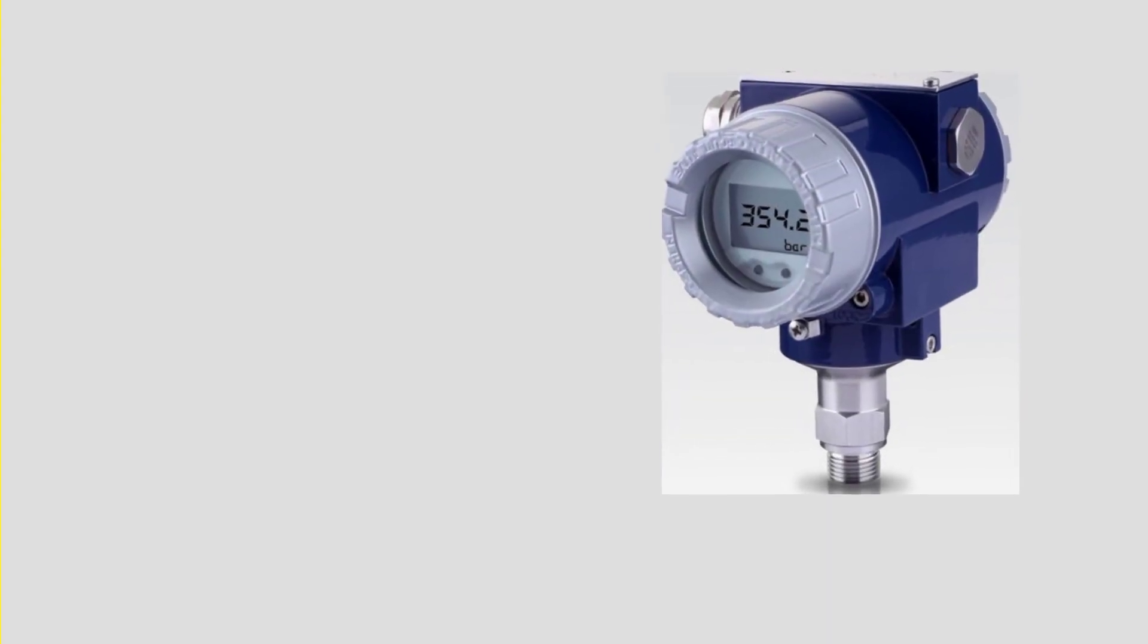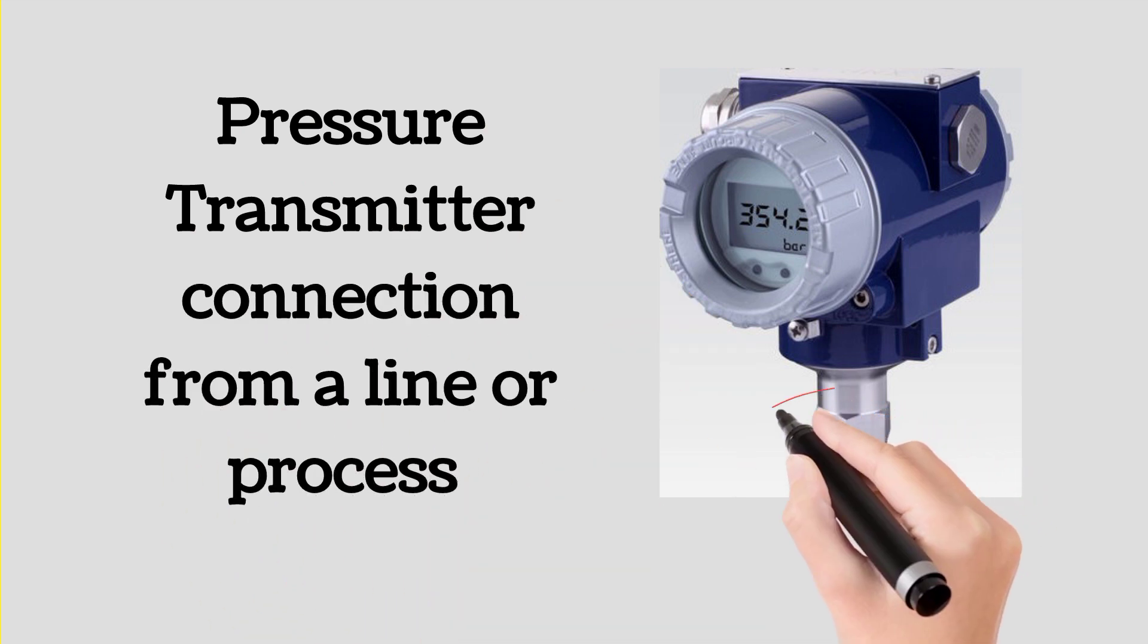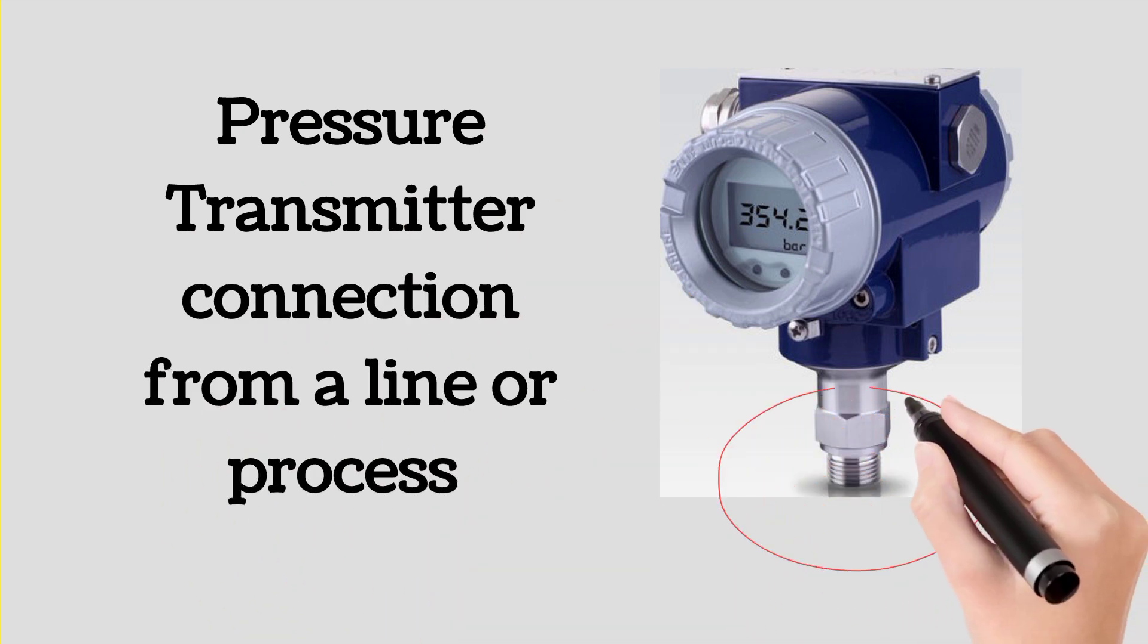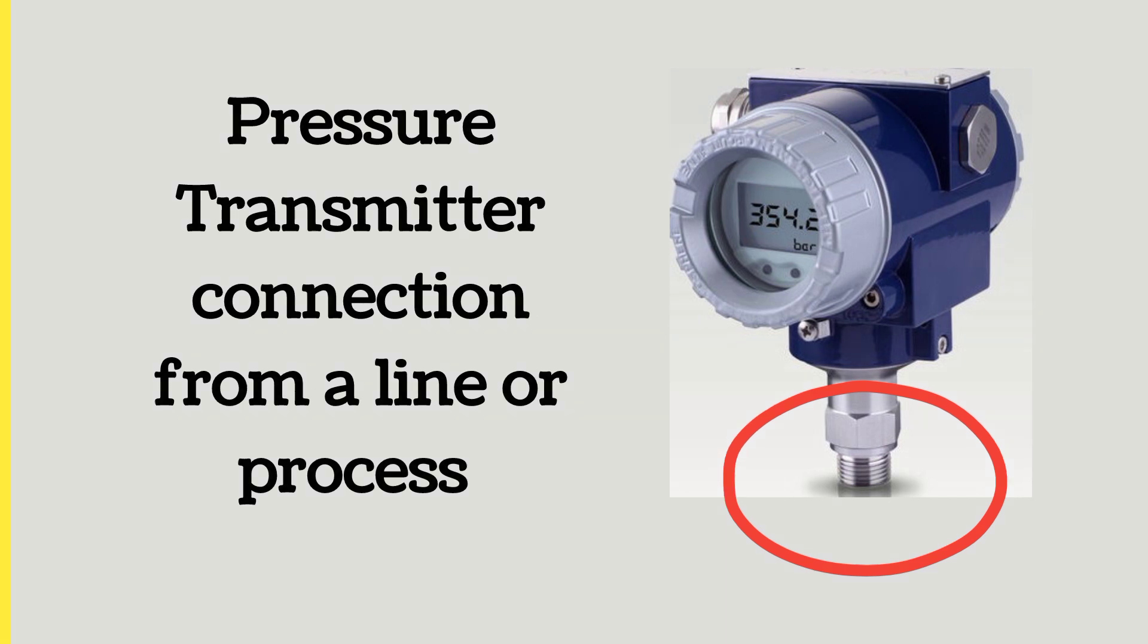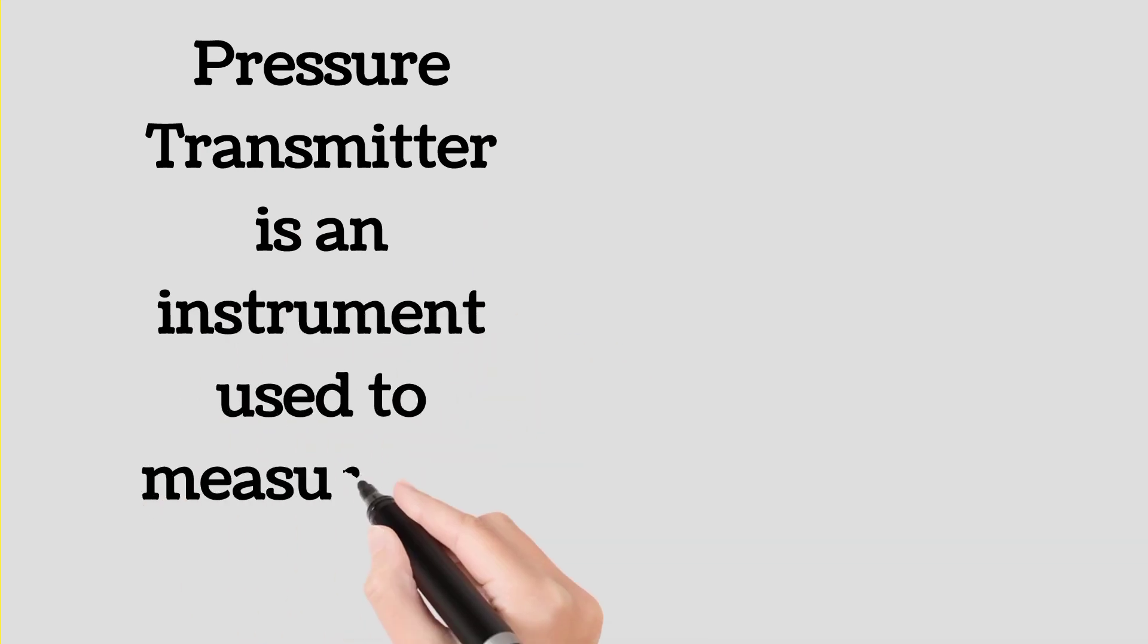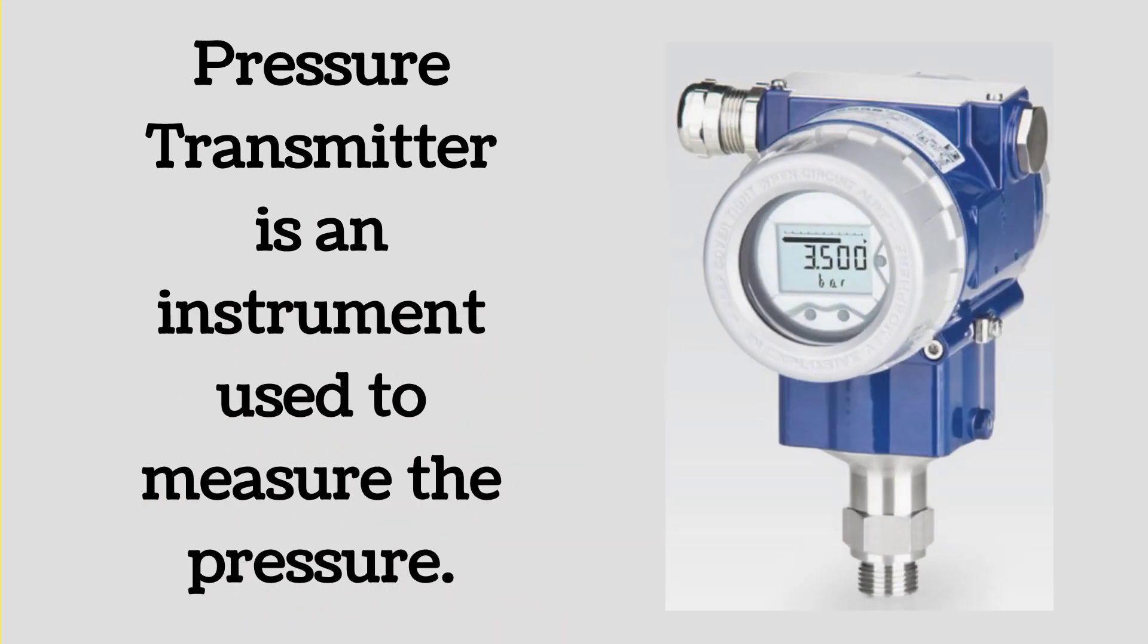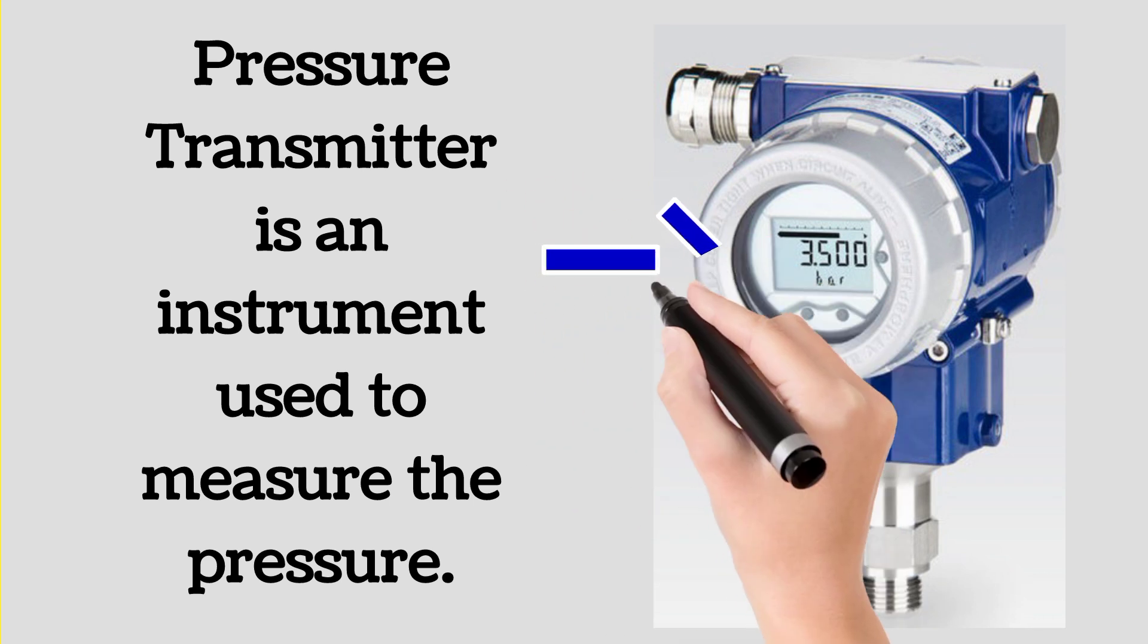Pressure transmitter is connected from a line or process by the port shown by the circle. Pressure transmitter is used to measure the pressure. It will also indicate the pressure as shown by the blue arrow.